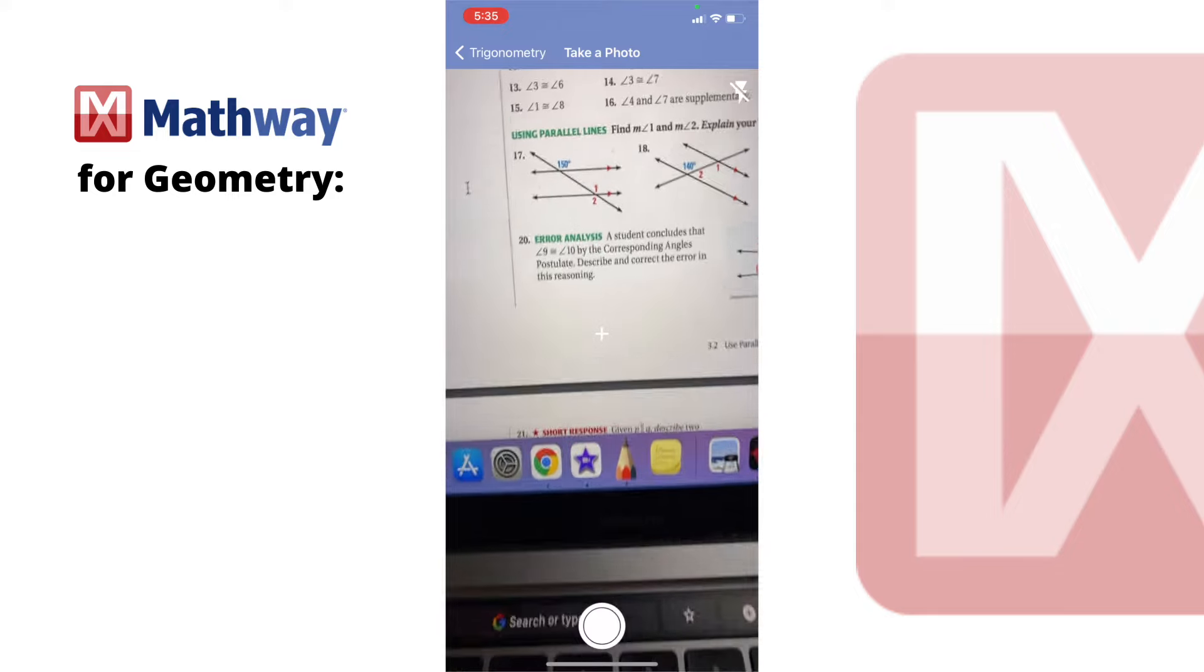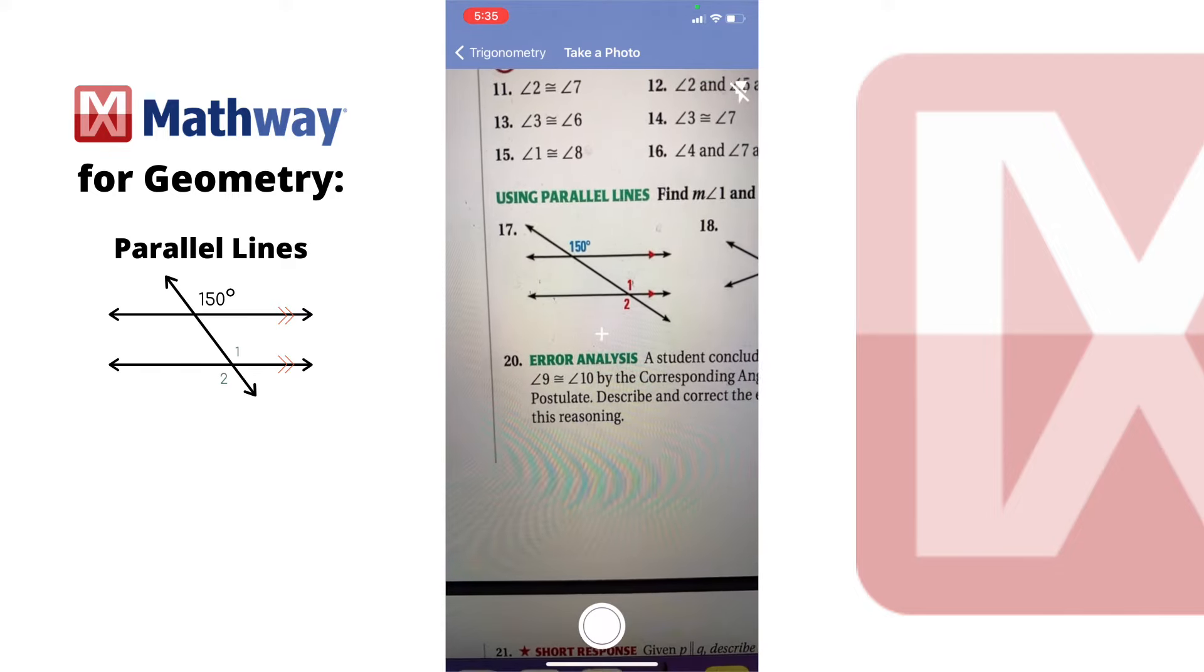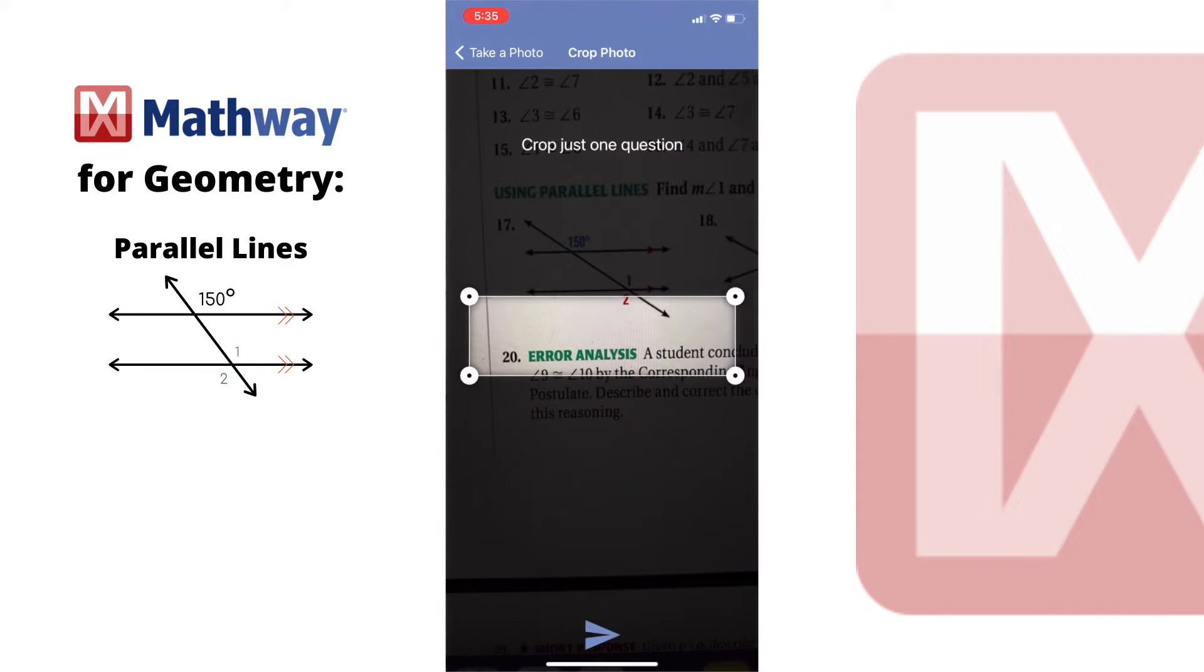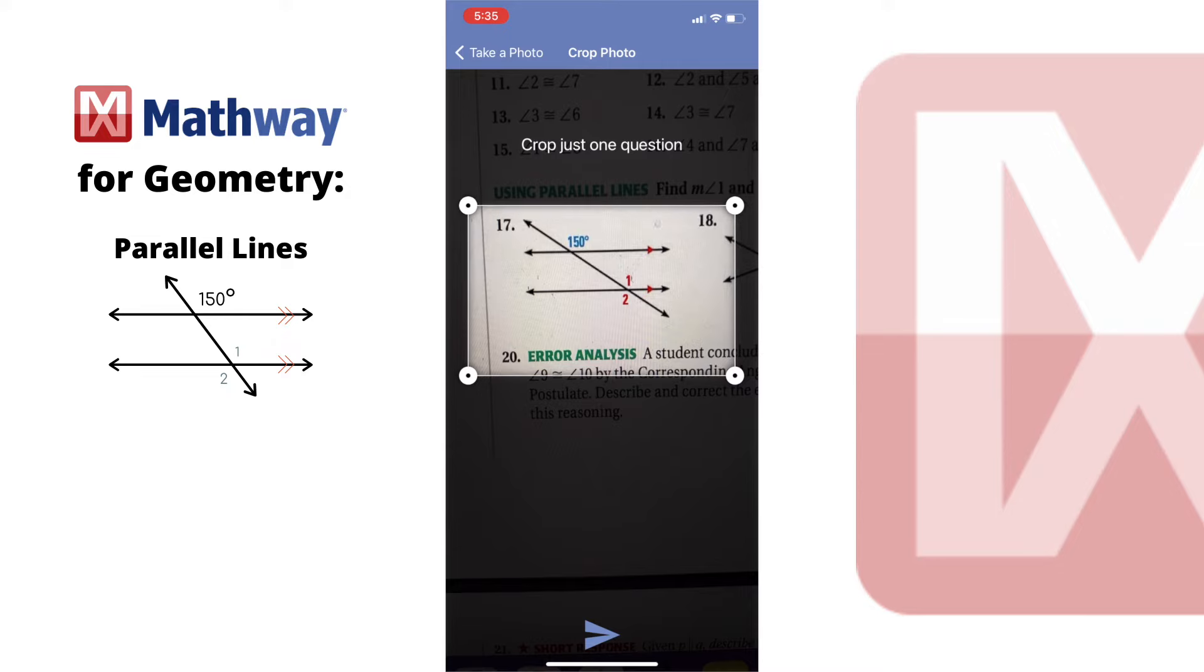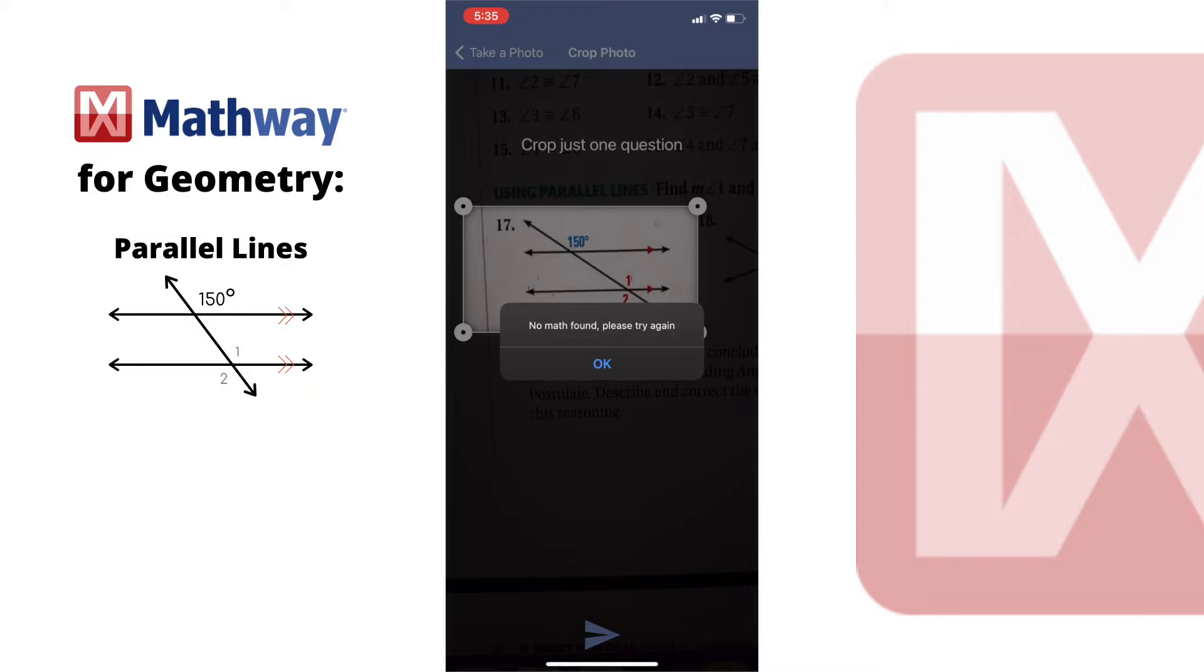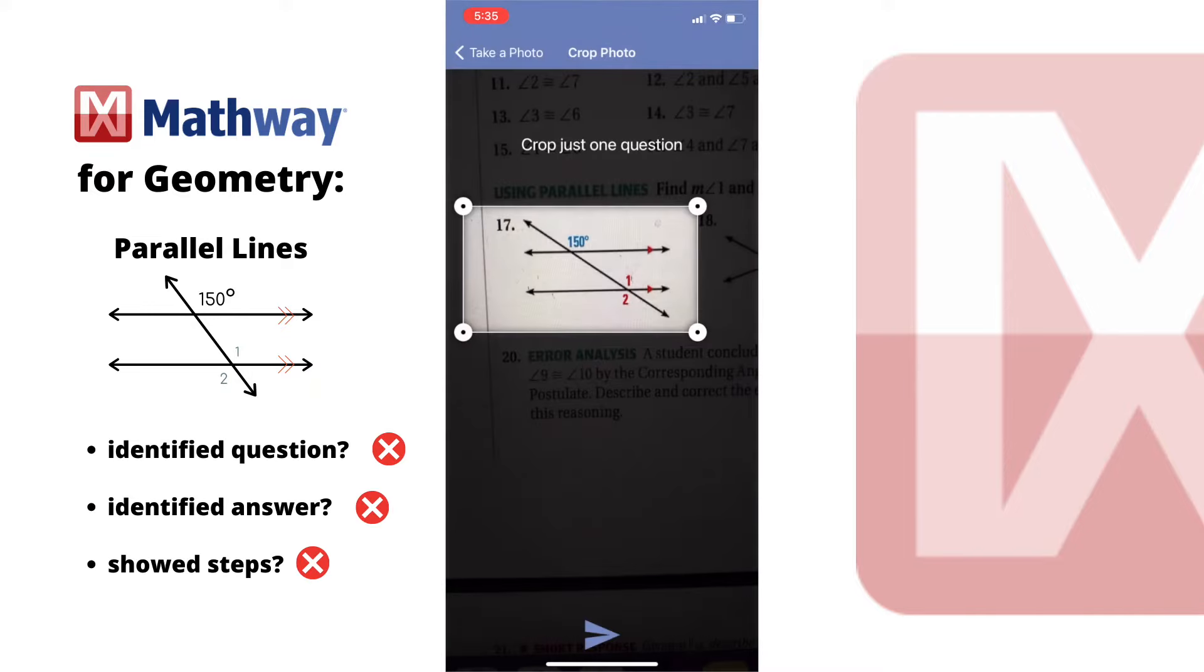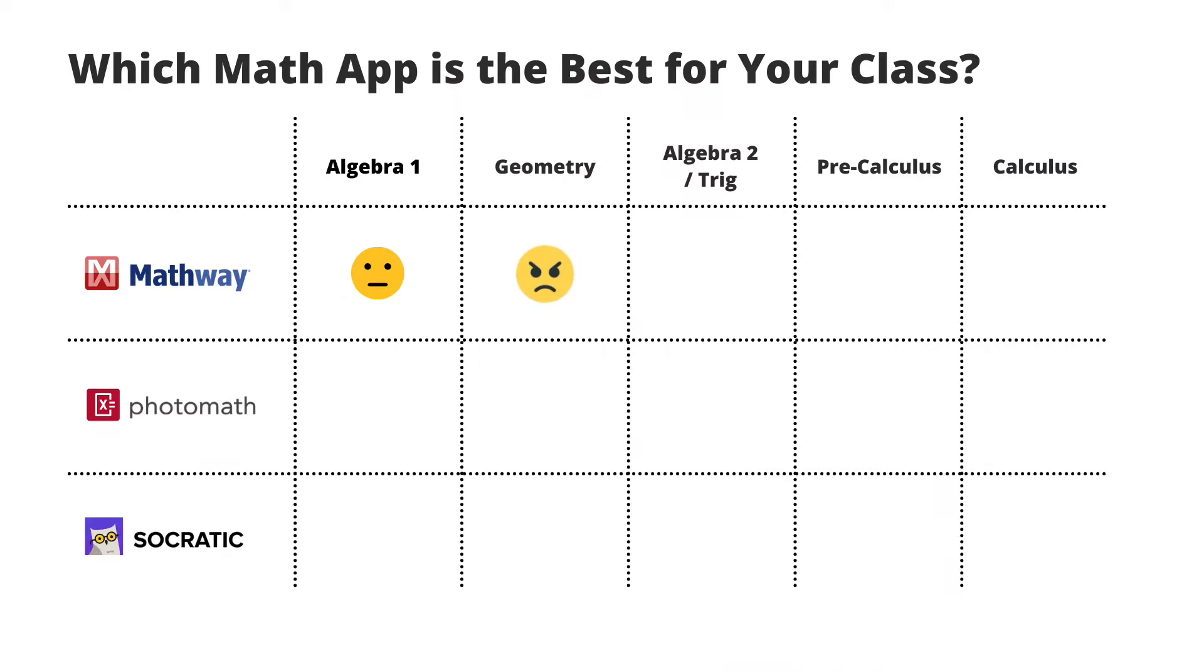Let's try a geometry problem. I've chosen a parallel line problem where you're supposed to find the values of angle one and two using different angle pair relationships. It says no math found. It looks like it doesn't know how to read diagrams,